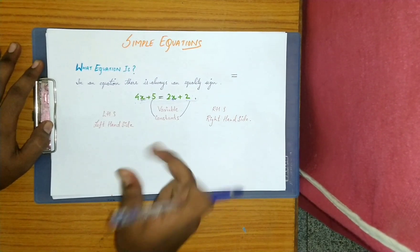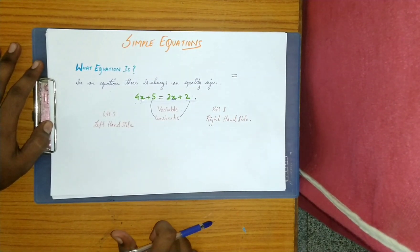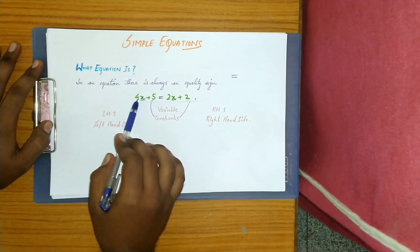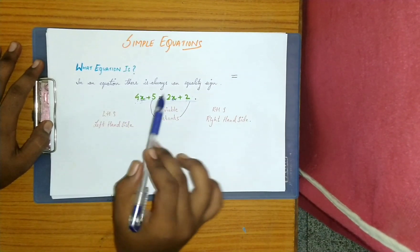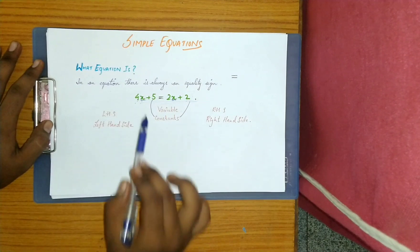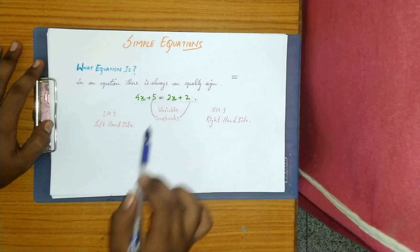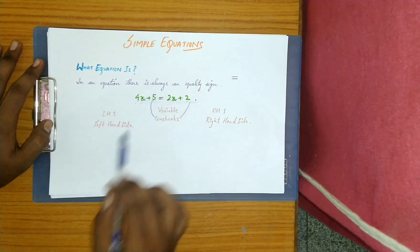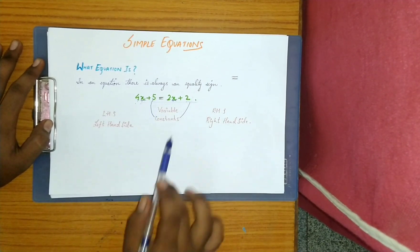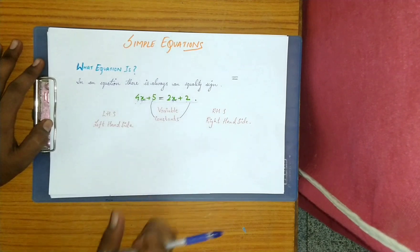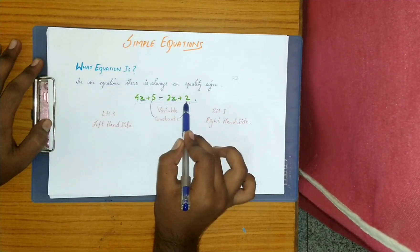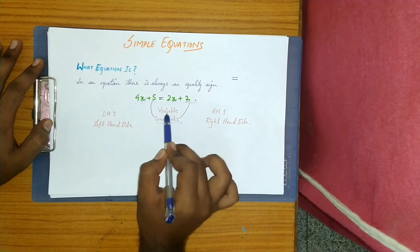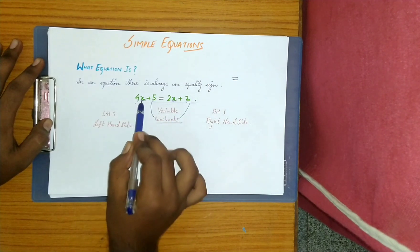4 and 2 are not constants — they are coefficients, which you will study in later classes. Just remember: whichever numbers are sitting alone with nothing beside them are constants. Constants are basically numbers sitting alone, while variables are also present.